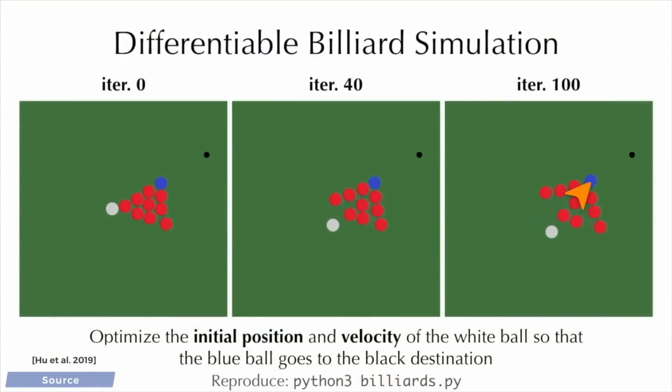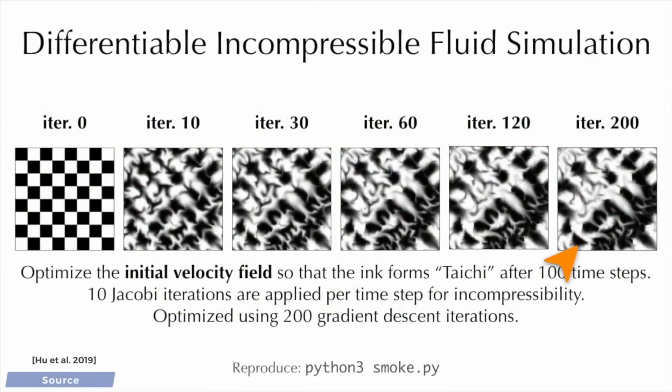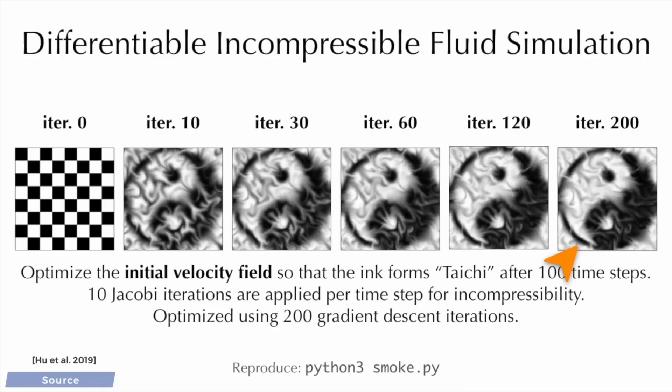For instance, we would be able to almost instantly solve this billiard game with just the right amount of force, and from the right direction, such that the blue ball ends up close to the black spot. Or simulate ink with a checkerboard pattern and exert just the appropriate forces, so that it forms exactly the yin-yang symbol shortly after.